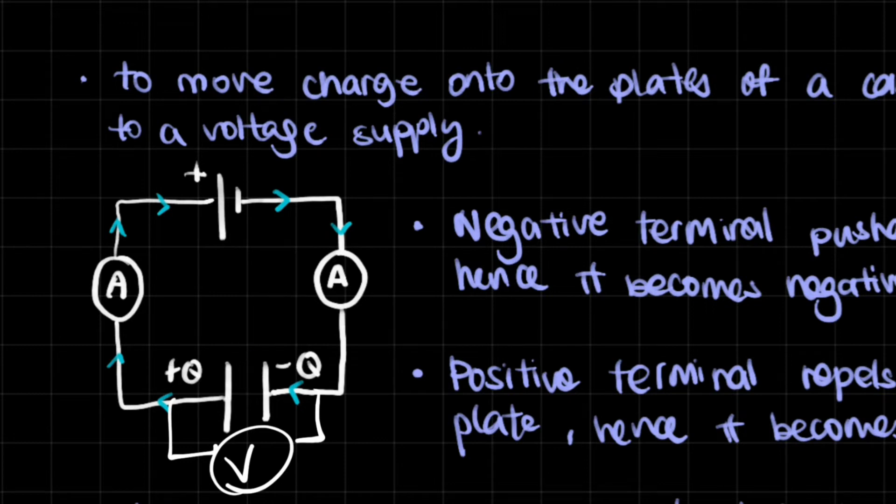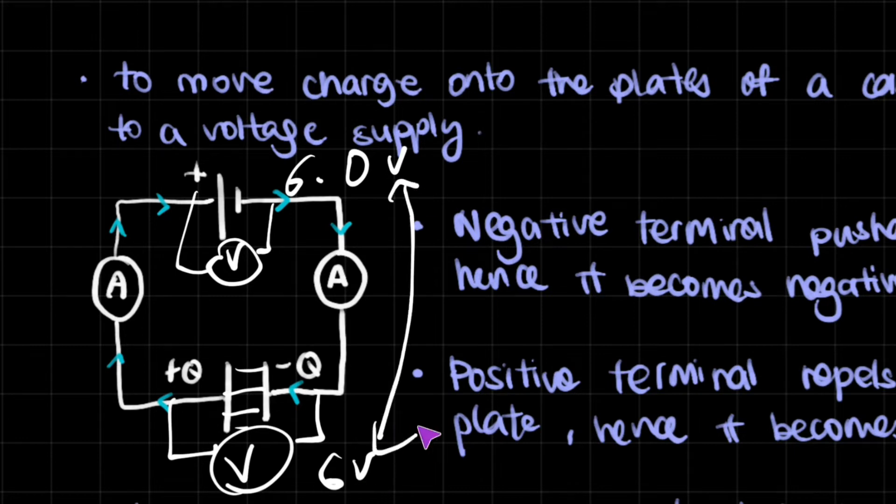The electric field between this, the magnitude will increase because of the fact that charges are continuously being built up. Let's say that this has an EMF of 6.0V. The closer we get to this potential difference being 6.0V, the less current will flow. And once these two are same with each other, the current will stop flowing. It will become zero.